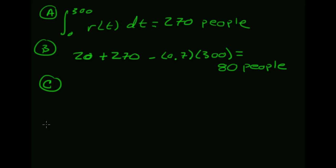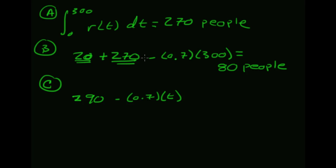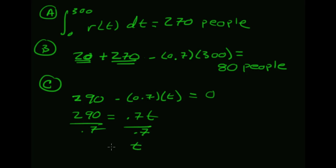Part c: if we're above t=300, what is the first time there are no people in line? Above 300, the number entering the line is zero. At time 300 there are 290 people — 20 to begin with plus 270 more in the first 300 seconds. They're all leaving at 0.7 per second, so we solve 290 = 0.7t. Dividing gives t ≈ 414.285 seconds.